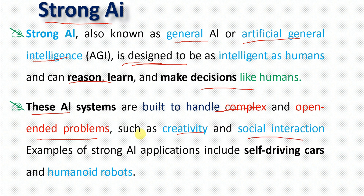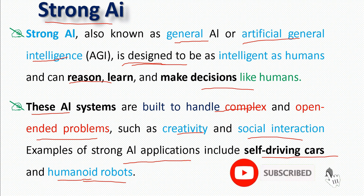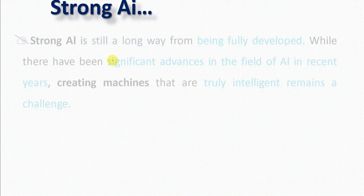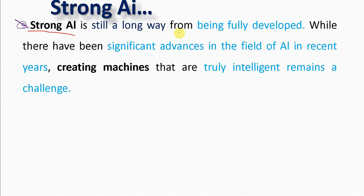Examples of strong AI applications include self-driving cars and humanoid robots. These two applications are the result of strong AI. However, strong AI is still a long way from being fully developed.